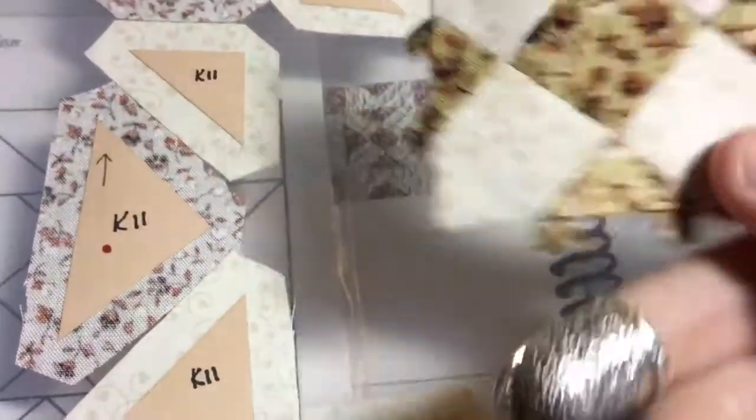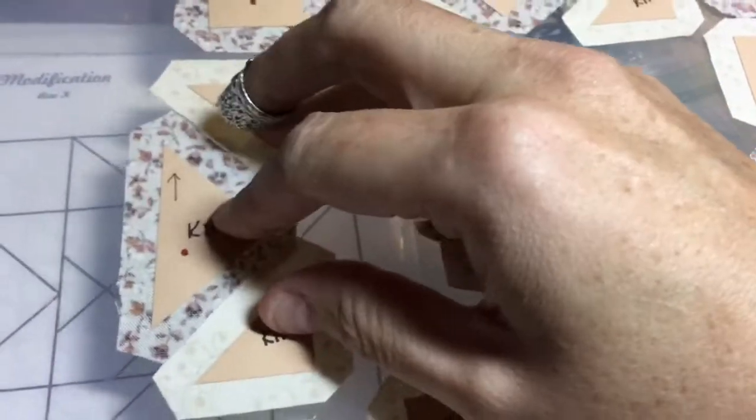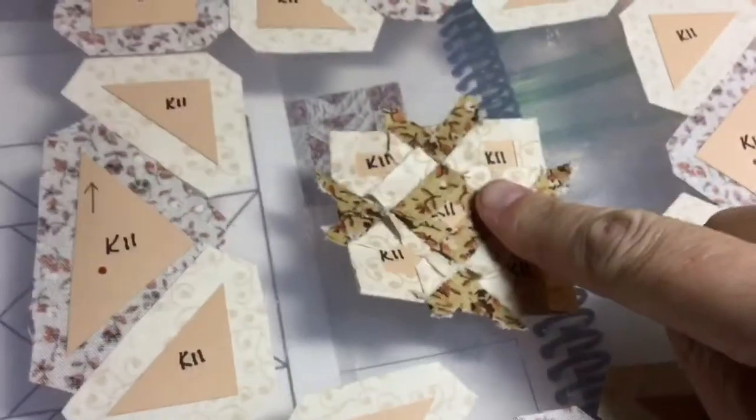Center square all assembled and now on to the three piece unit here to make the flying geese that I can attach to my center square.